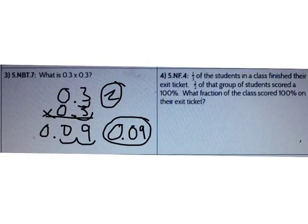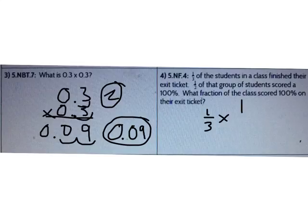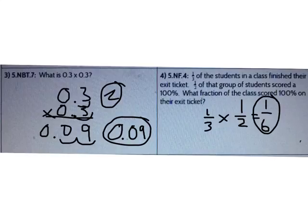Let's look at number 4. One third of the students in a class finish their exit ticket. One half of that group of students scored 100%. What fraction of the class scored 100% on their exit ticket? Well, I'm finding a fraction of a fraction, so I need to multiply 1/3 times 1/2. 1 times 1 is 1 and 3 times 2 is 6. So 1/6 of the class scored 100% on their exit ticket.